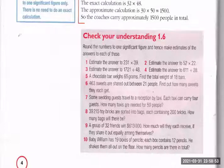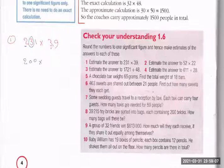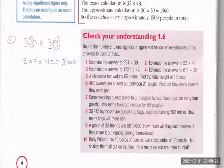39 times 200. This is the first one, 231 times 39. Round each number to one significant figure. So 231 becomes 200 — look at the digit to the right, it's 9, so round up to give 40. The approximate answer: we have three zeros, so it's 8 thousandths... times 2 is 8, so eight thousands.